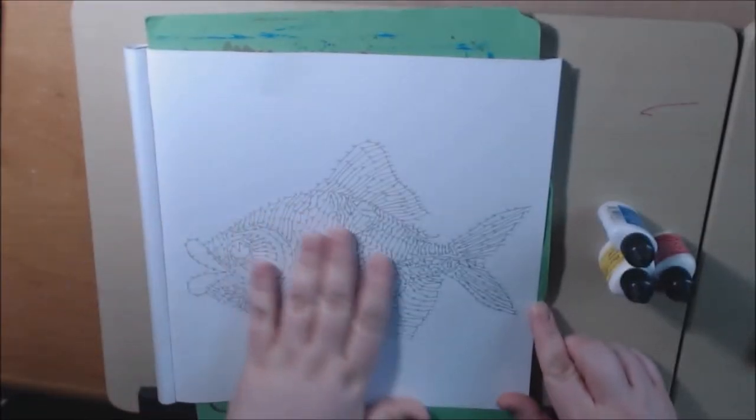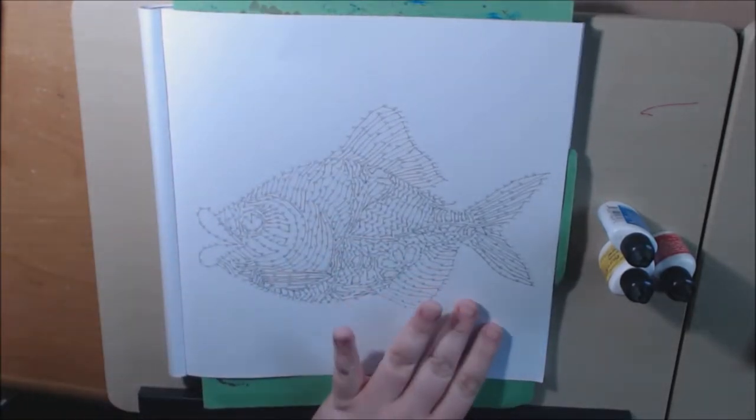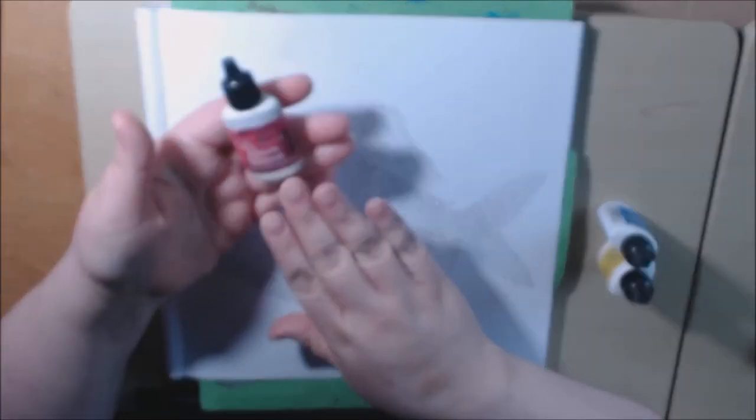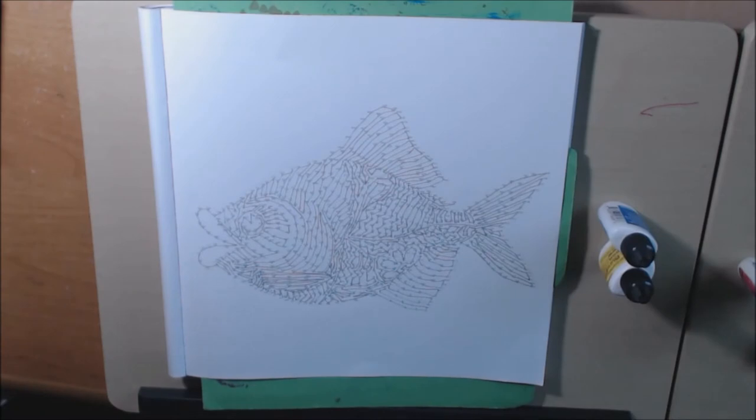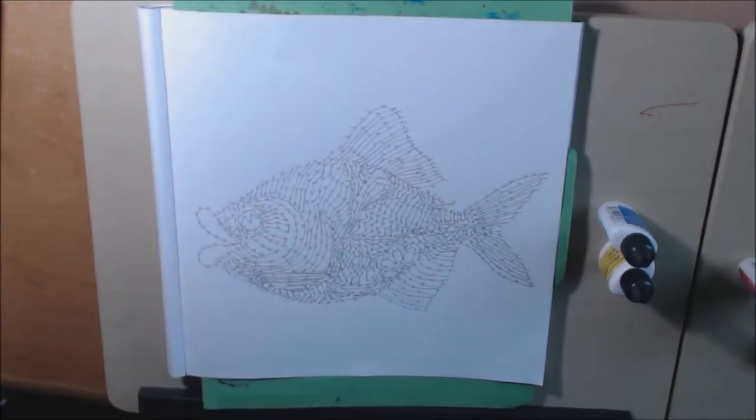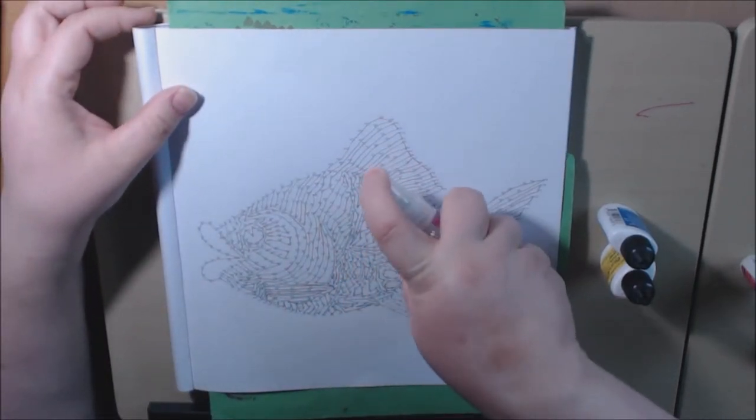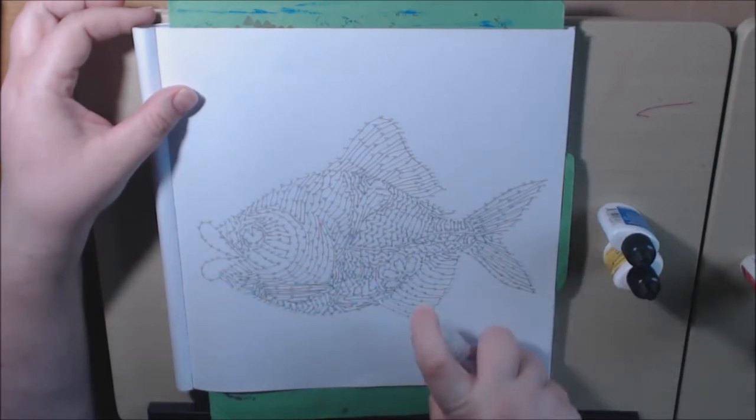I did this fish here and instead of coloring it, I wanted to try my Ken Oliver's Color Bursts. So what you need to do is, I like to spray the paper first. So I'm just going to lightly spray over the fish.